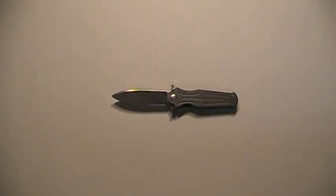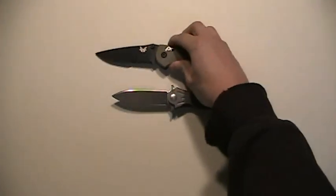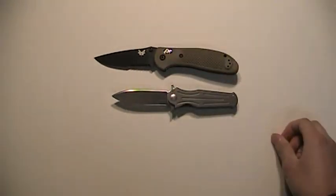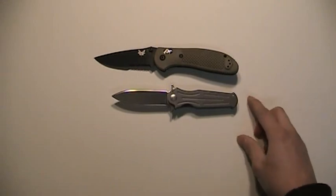Now, to show you how small this thing is, this is my full-size Griptilian. Put it right next for comparison. So this knife is about the same length as the Sog Visionary 1 I reviewed the other day. So it's very discreet.